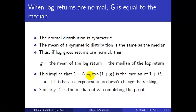Now if we go from little g to big G, remember that one plus big G is the exponential of one plus little g. Then it must be that one plus G is the median of one plus R. That's because exponentiating doesn't change the ranking of things. So we still have the same order after exponentiating, so the middle observation will still be the middle observation.